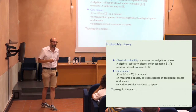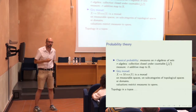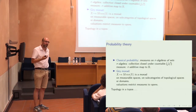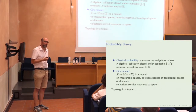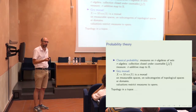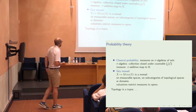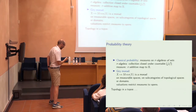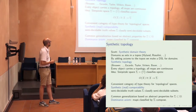The next thing we need to do is to do topology in a topos, but we want to do it in such a way that it's not a set with extra structure — we want every object in our topos to have a topology on it. I'll show you how to do this, but first some motivation.